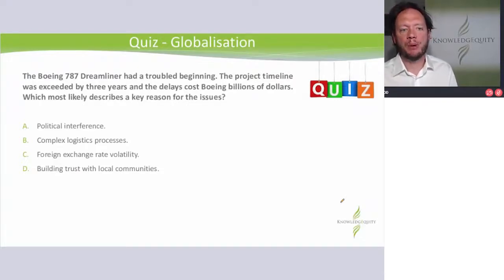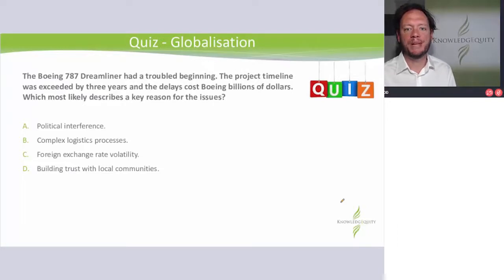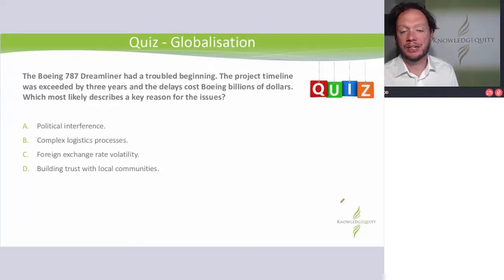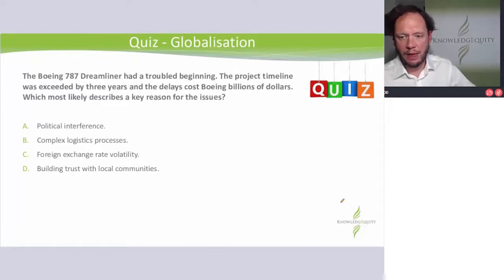Quiz. The Boeing 787 Dreamliner had a troubled beginning. The project timeline was exceeded by three years and the delays cost Boeing billions of dollars. Which most likely describes a key reason for the issues — A, B, C or D? Pause the video and have a go.